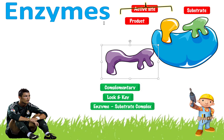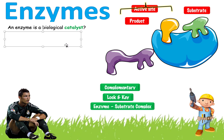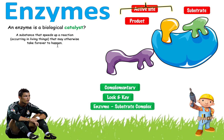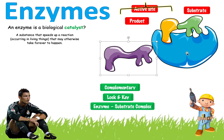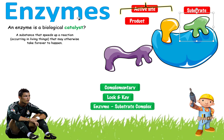An enzyme is a biological catalyst. In simple terms, it is a substance that speeds up a reaction that may otherwise take forever to happen. Biological means it happens in living things — these are the tools of our body. A catalyst is anything that speeds up a reaction. These two molecules could float around forever and maybe eventually collide, but an enzyme can speed up that reaction by millions of times.